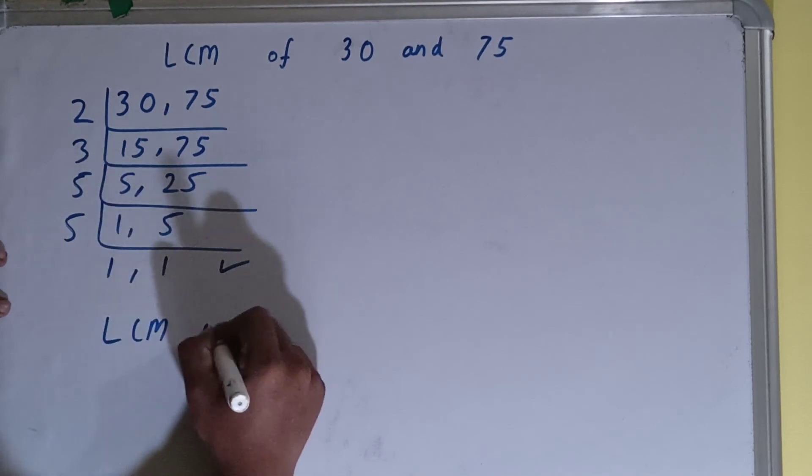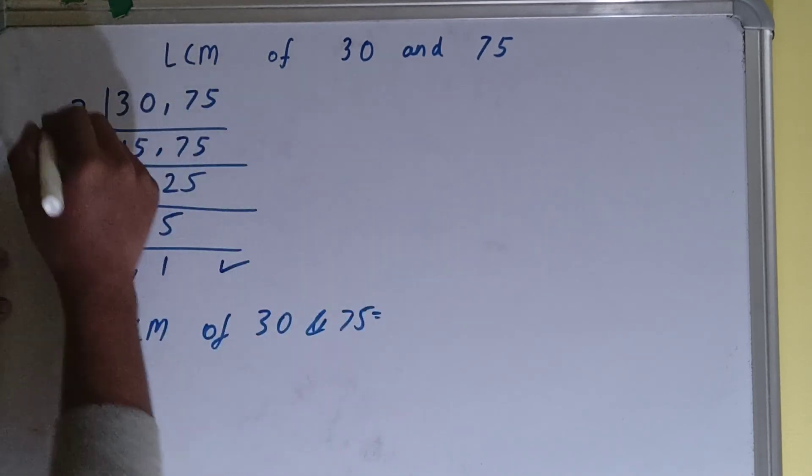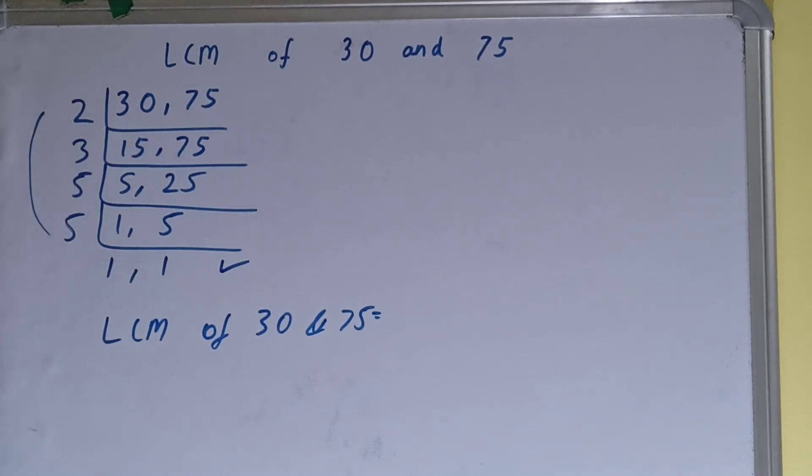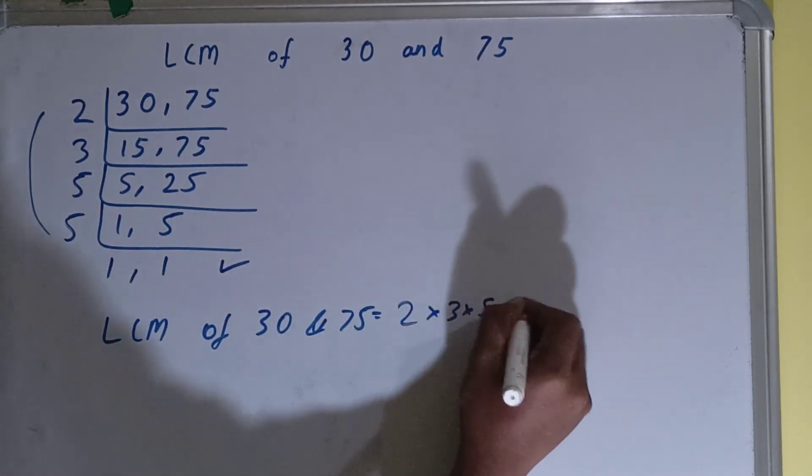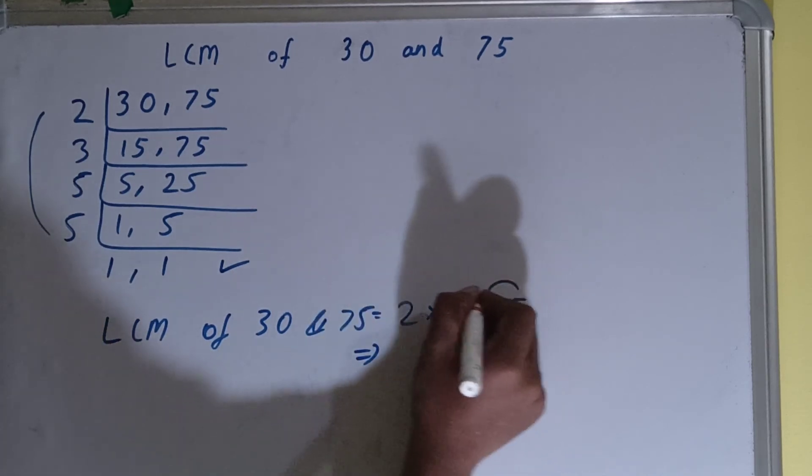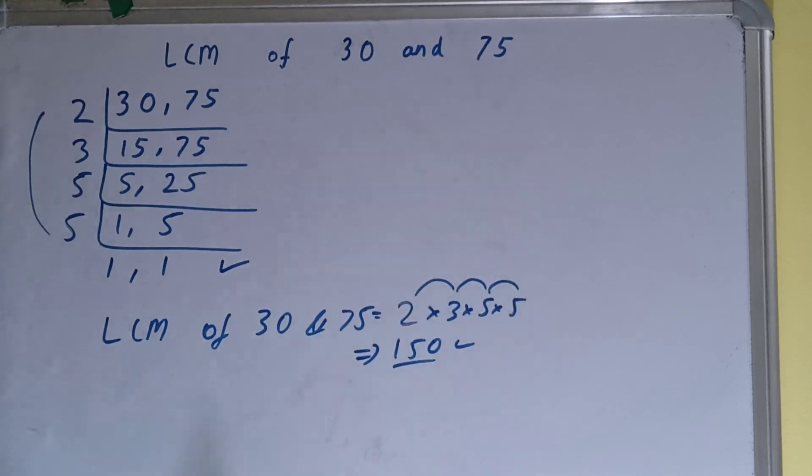We need to do one last thing. The LCM of 30 and 75 equals multiplying whatever we got on the left-hand side: 2 × 3 × 5 × 5. So the answer will be: 5 × 5 is 25, × 3 is 75, × 2 is 150. So the LCM is 150.